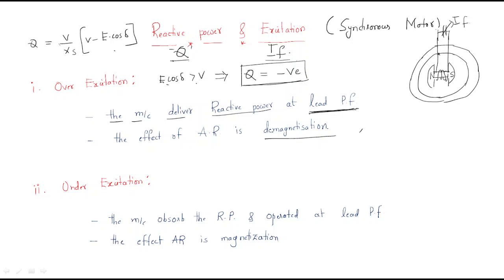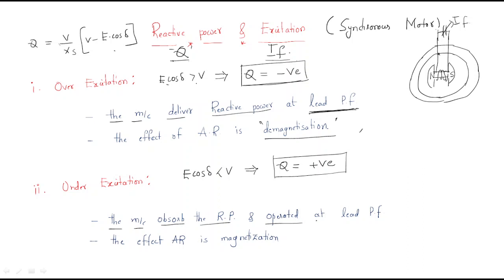Second case: under-excitation. Here E·cos δ is less than V. Whenever E·cos δ is less than V, the reactive power Q becomes positive. Whenever Q is positive, the machine absorbs reactive power and operates at a lagging power factor. The effect of armature reaction in this case is called magnetization.